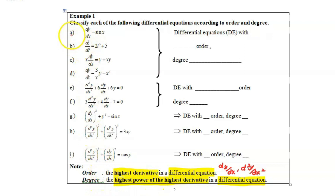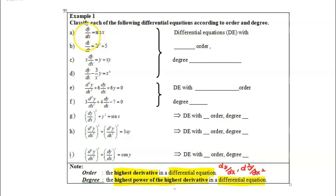Let us move into question A. Any differential equation must consist of at least one derivative. Here we have dy over dx, and it relates the independent and dependent variable, y and x. Looking at questions A, B, C, and D, all these differential equations have the first-order derivative: dy over dx, ds over dt, dy over dx, dy over dx — all these are first derivatives.